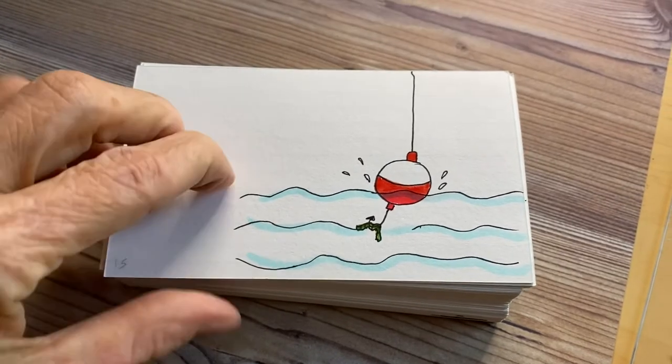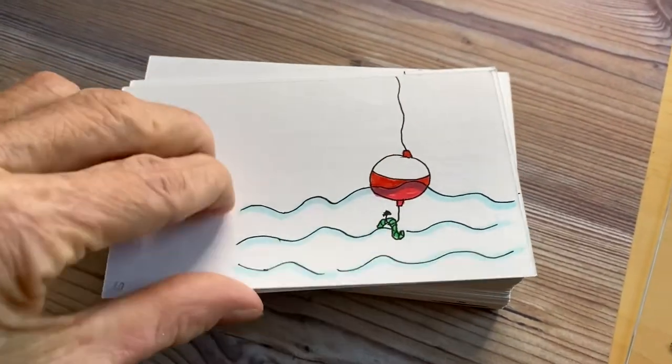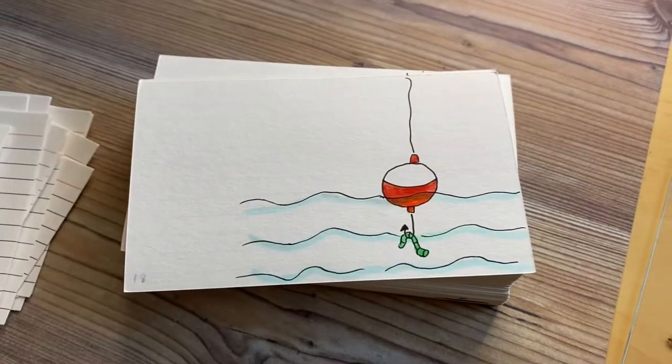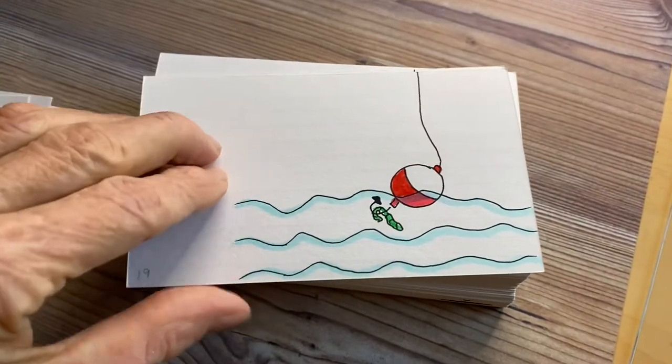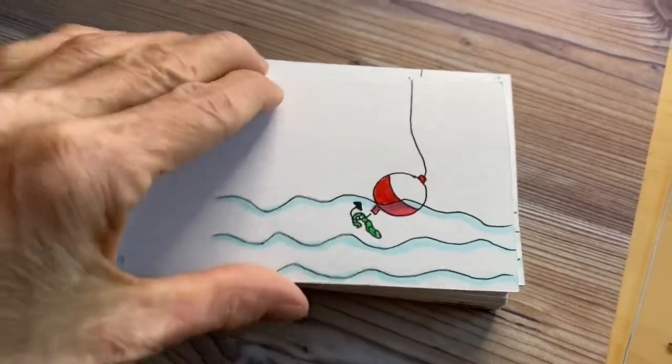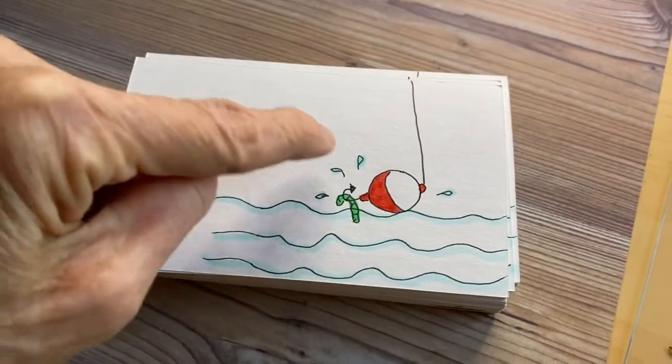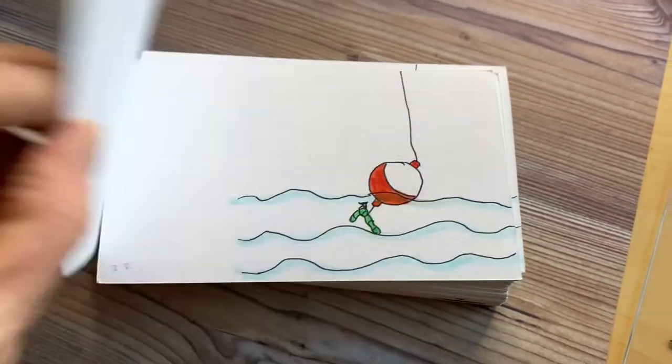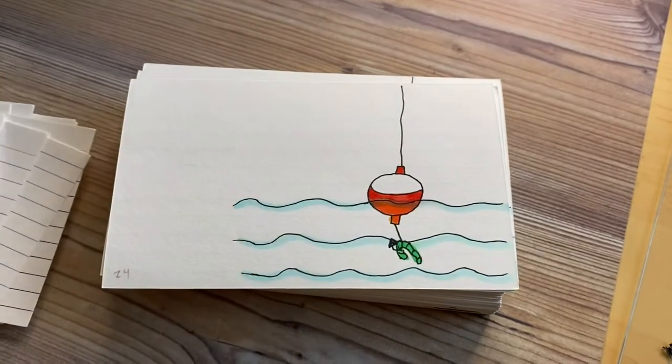It's a new scene with the bobber in the water bobbing back and forth. It's moving this way, and then some water splashes are coming out. Now it's gonna move and bob to the other way.